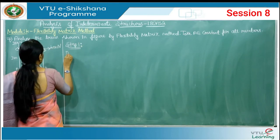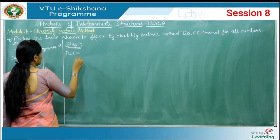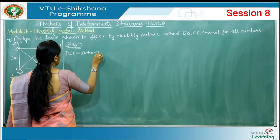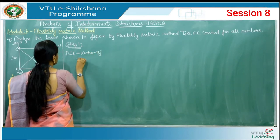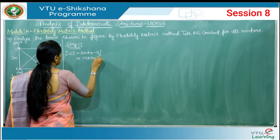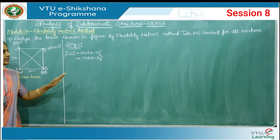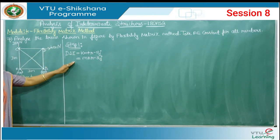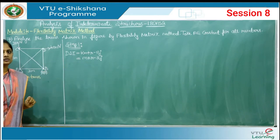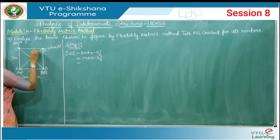We start with step number one: finding the degree of static indeterminacy. The formula is given by km plus r minus nj. For trusses, k can be taken as one and n can be taken as two, so the formula becomes m plus r minus 2j.